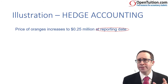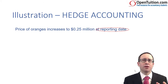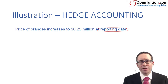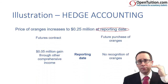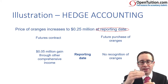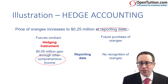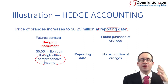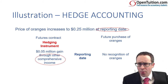At the reporting date, the price has increased to $0.25 million. The price has risen but we haven't bought the oranges yet. There's a movement on the value of the futures — we've placed a bet on the price going up, so we are winning our bet. There is a gain of $0.05 million. That's a hedging instrument and part of a cash flow hedge, so under cash flow hedges the gain goes through other comprehensive income — it's hidden away in OCI. It doesn't hit profit or loss, and nothing is recognised yet for the purchase of the oranges.